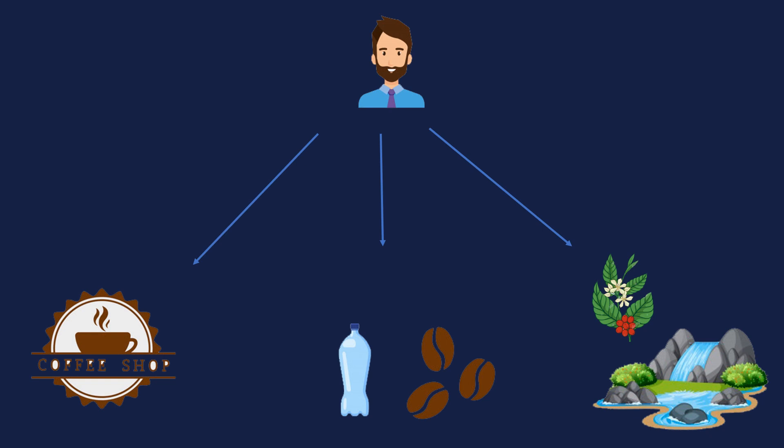To summarize: the first way — getting water from the river and beans from the plant — is called no dependency injection. He depends only on himself. The second case — depending on the factory that creates beans in boxes and the factory making water bottles — is called manual dependency injection.